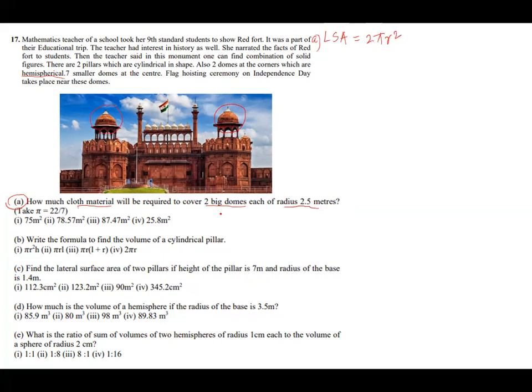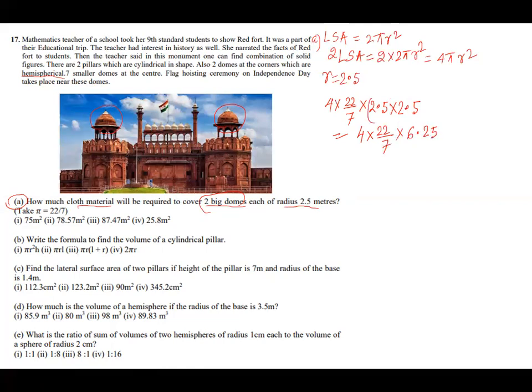For cloth, we need lateral surface area. So it is about hemisphere and lateral surface area. Lateral surface area of hemisphere is equal to 2 pi r square. Then how many hemispheres are there? Two big. So I will multiply. So 2 LSA is equal to 2 into 2, that will be 4 pi r square. What is r here? r is equal to 2.5. So you can calculate now. So I will write 4 into pi, which is 22 by 7, and r square is 2.5 whole square or 2.5 multiplies 2.5.